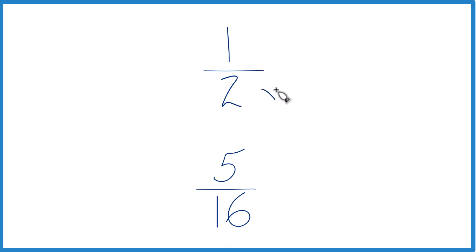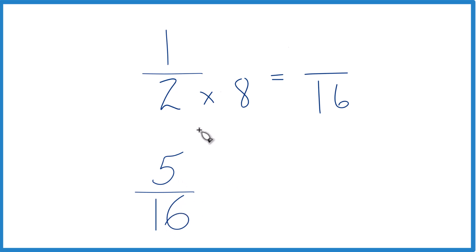So 2 times 8 would equal 16 here. So I'd have 16 in both denominators. But I can't just multiply the denominator here by 8, I have to multiply the numerator as well. 1 times 8, that's 8.